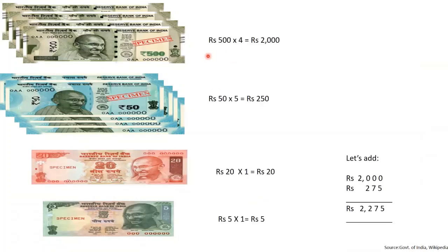4 into rupees 400 gives us rupees 2000. 5 into rupees 50 gives us rupees 250. 1 times rupees 20 is rupees 20, and here we have rupees 5. So, to get the total value, we have to add these. 250 plus 20 plus 5 gives us rupees 275. And when you add that with rupees 2000, you obtain rupees 2275 as the total value of the currency given here.